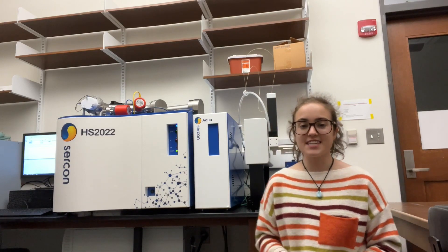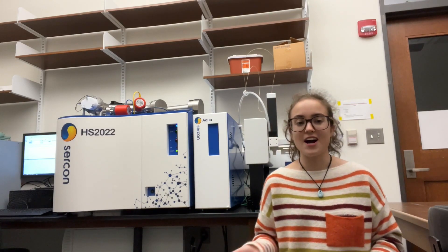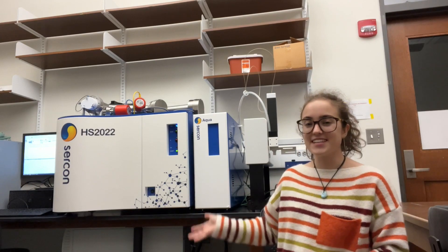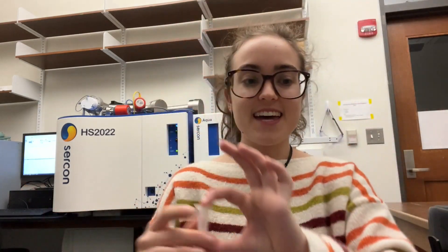We can measure the delta C13 values of carbonate rocks using an isotope ratio mass spectrometer. Essentially, you put your carbonate rock into the mass spec in powder form, and then the inorganic carbon gets dissolved and carbon dioxide is released, and then the mass spec analyzes the isotopic content of the carbon dioxide that's released during the acidification process.